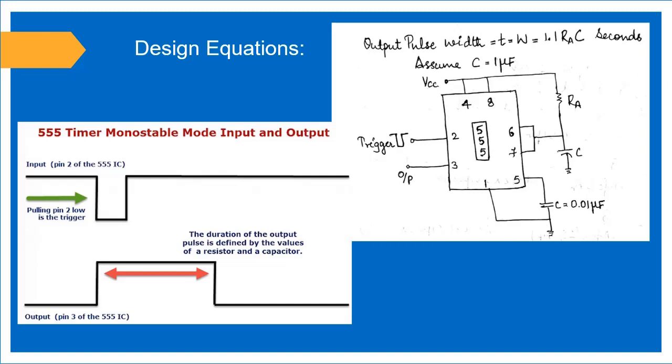One major observation is that we are applying a negative trigger pulse, shown by the waveform. This negative trigger pulse is applied at pin 2, and the output waveform is obtained at pin 3.